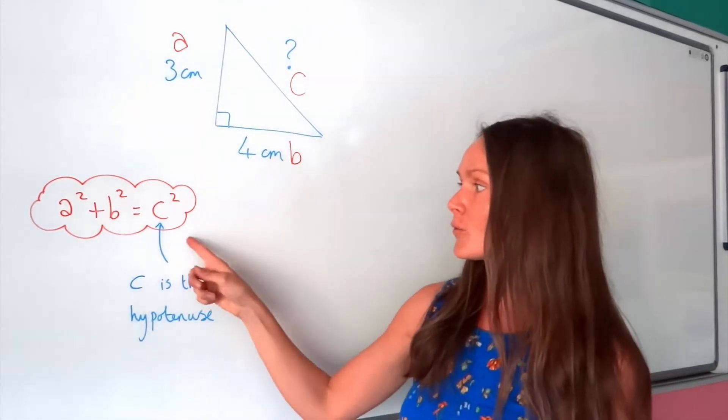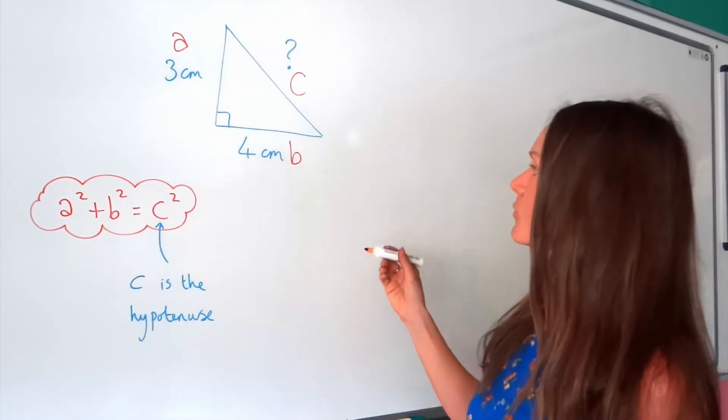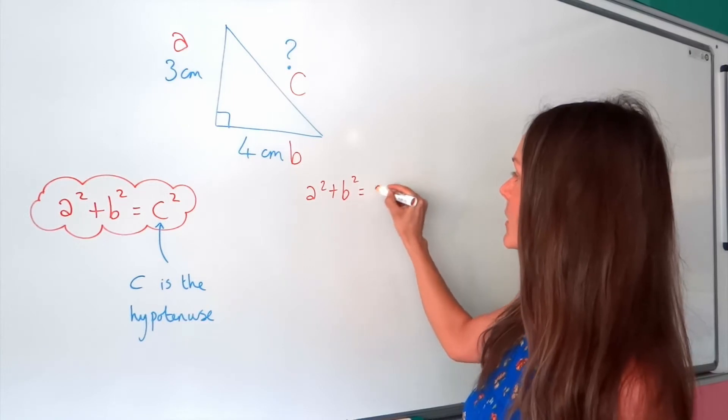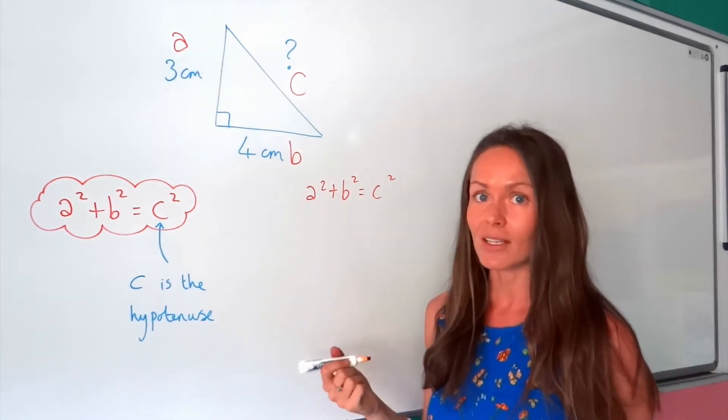Essentially, we're just using this formula to solve an equation to find c. So I'm going to write out the formula, Pythagoras' theorem, a squared plus b squared equals c squared.